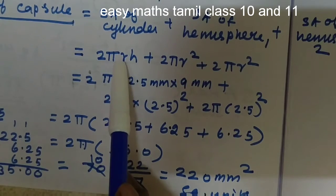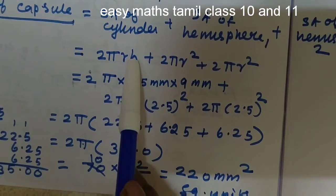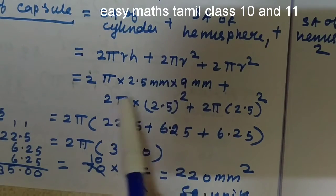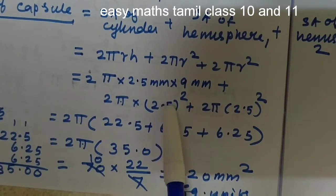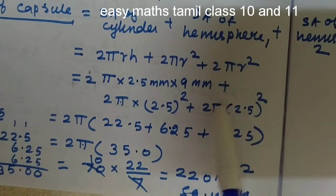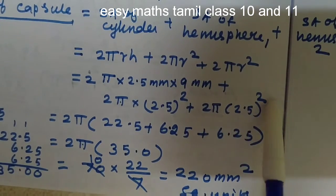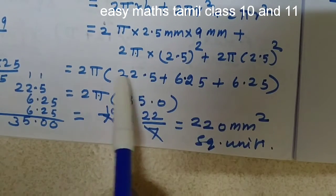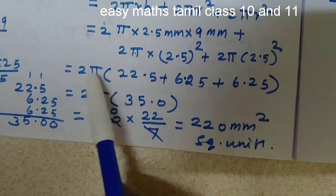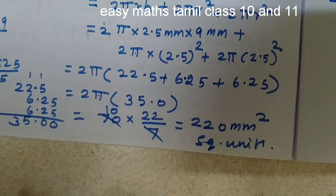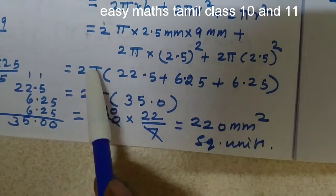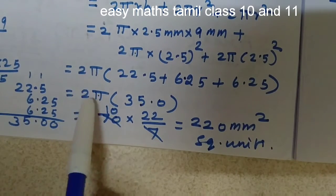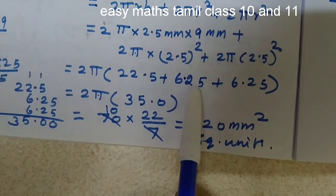Taking 2π as common for all terms, the expression becomes 2π multiplied by the remaining values: 2.5 into 9 is 22.5, plus 2π taken outside with 2.5² equal to 6.25, and again 2.5² is 6.25. Adding these values: 22.5 plus 6.25 plus 6.25 equals 35.